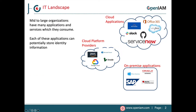Most mid to large companies that we work with today have a mix of on-premise and SaaS applications. They also use cloud providers such as AWS, Azure, and Google. Each of these applications and services can potentially have its own identity store. These identity stores may in turn contain different pieces of information about the user and what they're allowed to do within each of these applications and services.